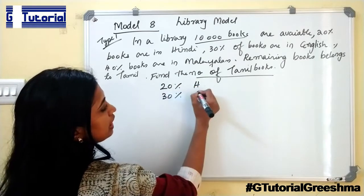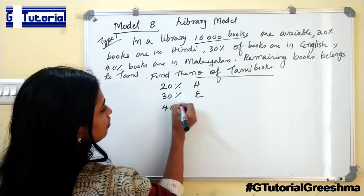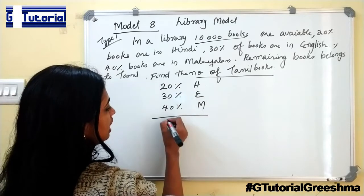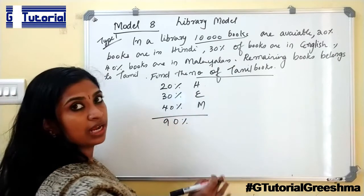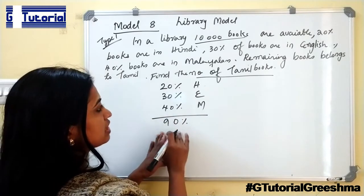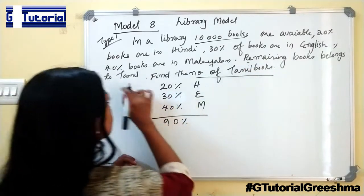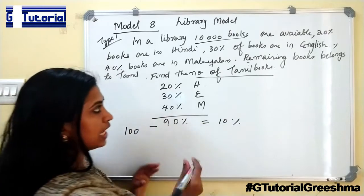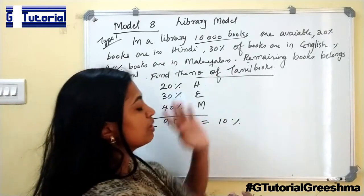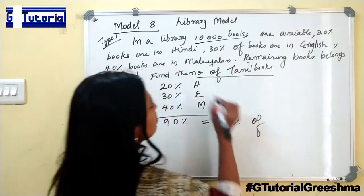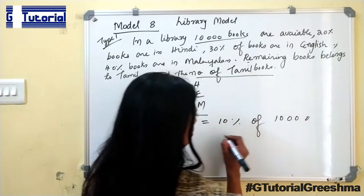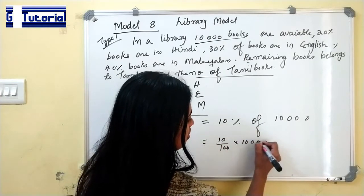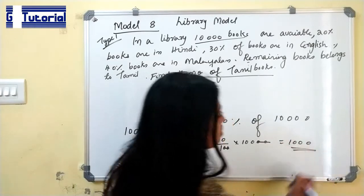30% of the books are in English and 40% of the books are in Malayalam. So the total is 20 plus 30 plus 40, which is 90 percentage of the books belonging to Hindi, English, and Malayalam. We have to find the rest of the books, that is the Tamil books. Total is 100%, so 100 minus 90 equals 10% of the books are Tamil books. The number of Tamil books is 10% of 10,000, which is 10 divided by 100 of 10,000, giving 1,000 books belonging to Tamil.